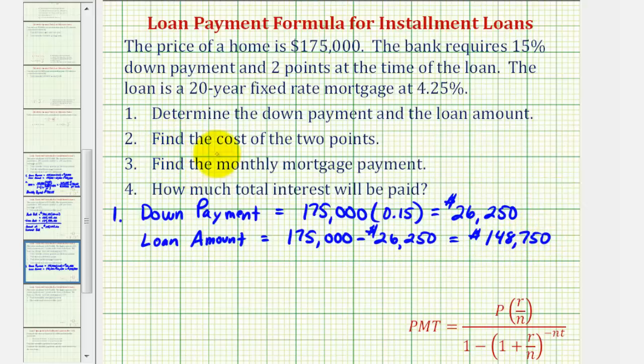For number two, we want to determine the cost of the two points. If a loan has points, it has extra costs attached to it. And for every point, you pay an extra 1 percent of the loan amount.